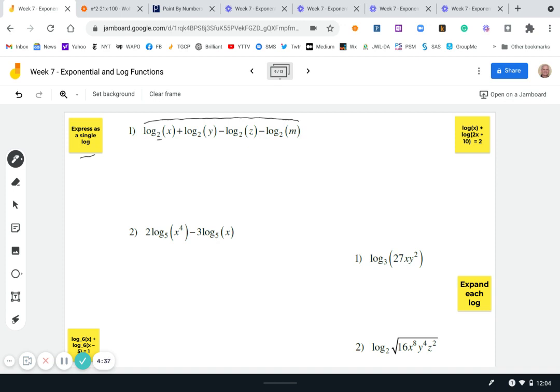So since these are all log two, they all have to be part of the same log. You can't do this with logs of different bases. You can only do this with logs of the same base. What we can do is use our product rule, our quotient rule to bring these together.